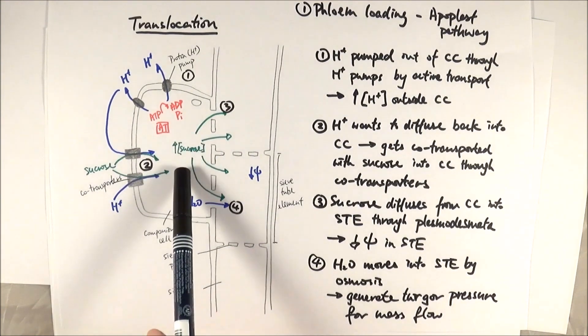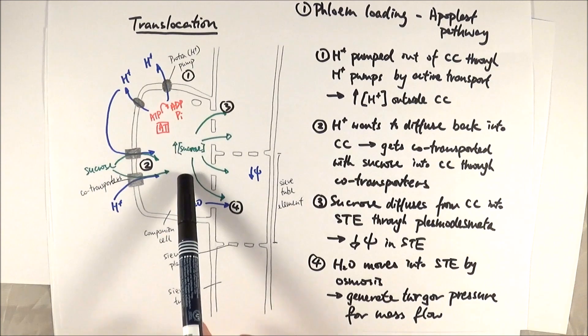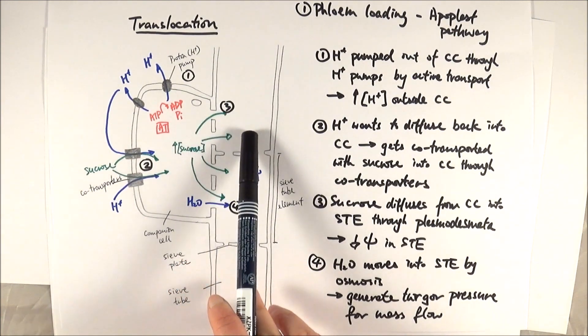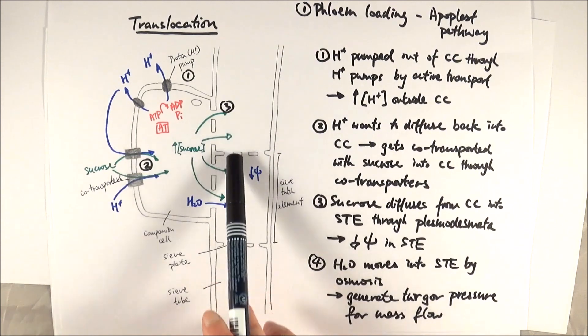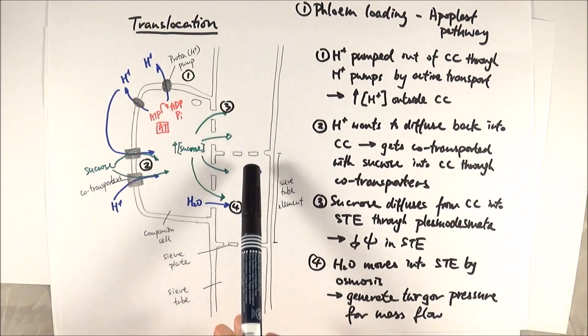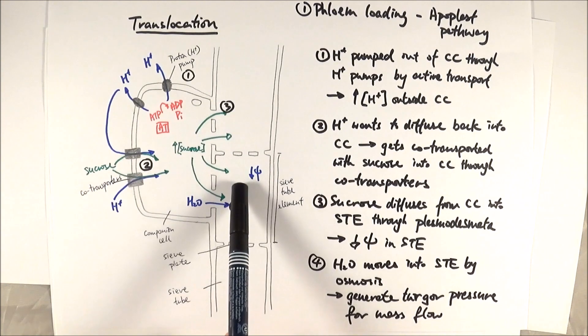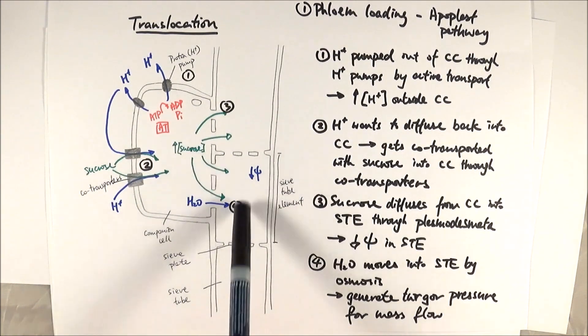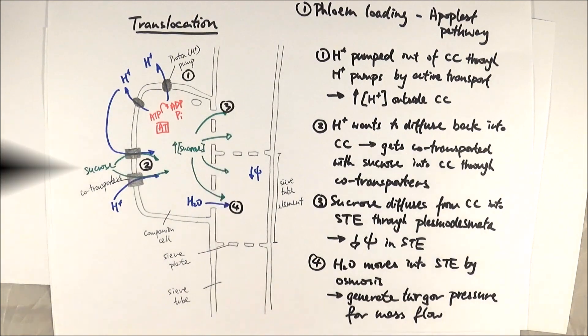This leads to a higher concentration of sucrose inside the companion cells. Therefore, they will diffuse through the plasmodesmata into the sieve tube elements. Because of this increased concentration in the sieve tube elements, you are decreasing the water potential inside. Therefore, water will move in as well, generating turgor pressure for mass flow.